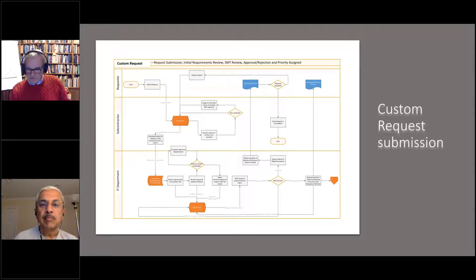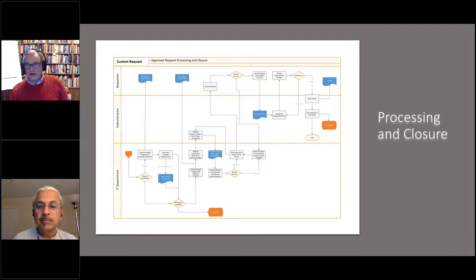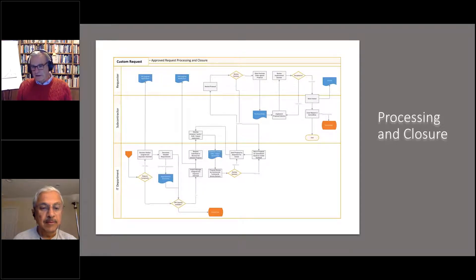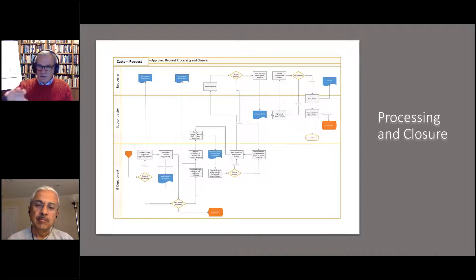Various stakeholders held workshops to understand the process involving the requester, the subcontractor, and the IT department. What emerged was a tangled web of business processes. The processing and closure part of the process alone — from start through to invoice — was highly complex. The first job of Kanban is not to redraw the business processes but to start from what you do now and look at work in a different way, leading to continuous improvement.